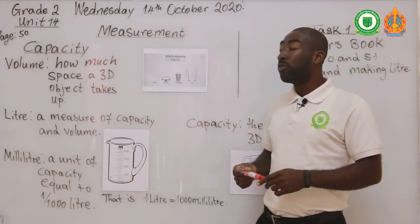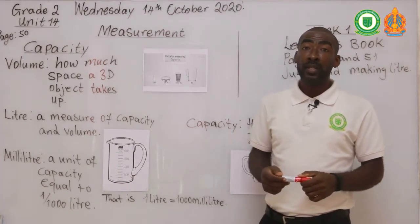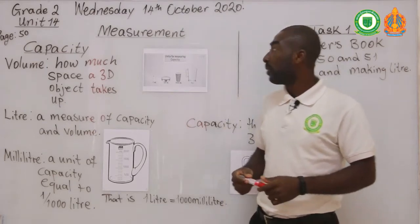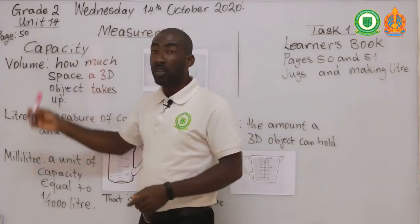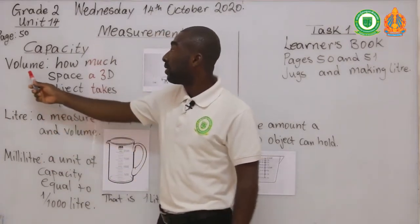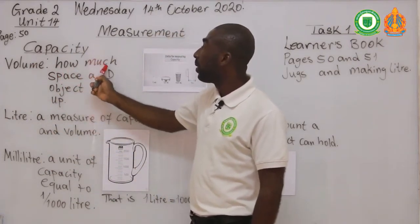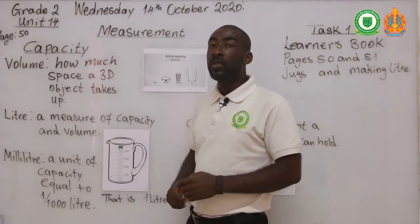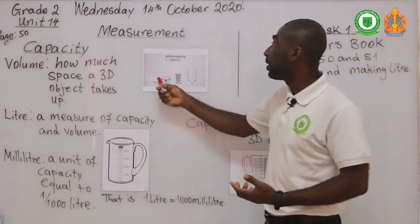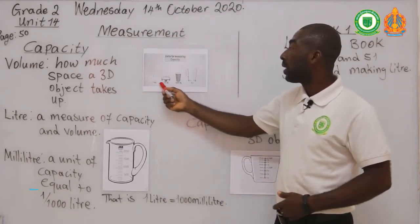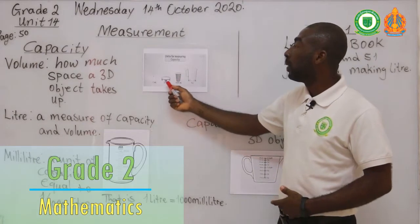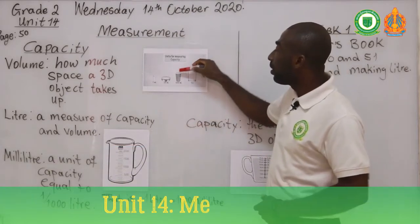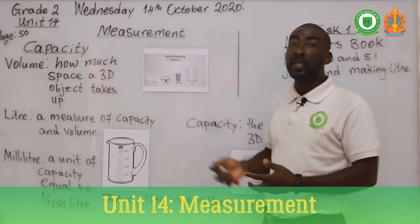First we'll go through some very important keywords that relate to measuring of capacity. The first thing that we're going to look at is volume. Volume is how much space a 3D object takes up. So when you have objects like a jug, a cup, a bowl, and a small glass — so how much these cups or containers can hold.